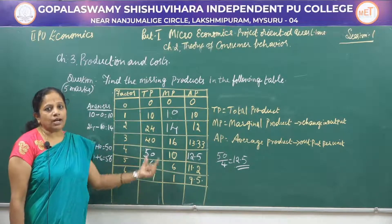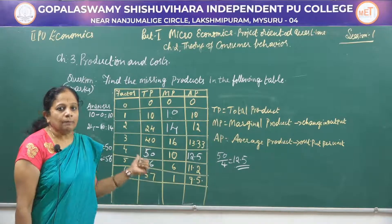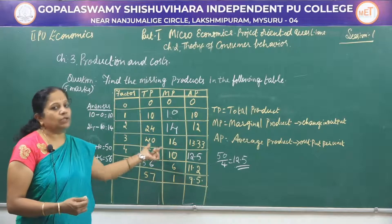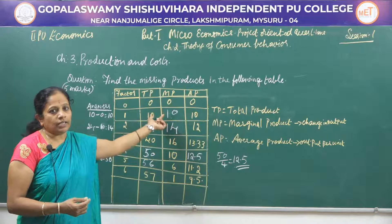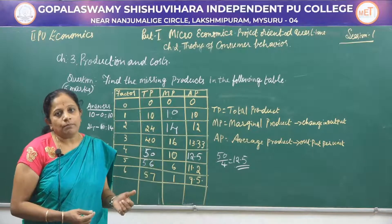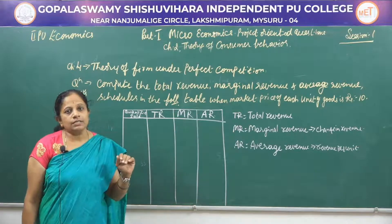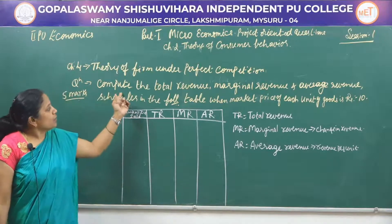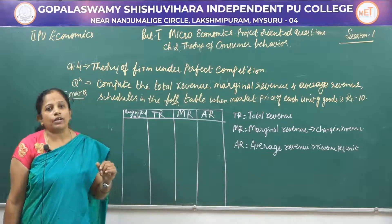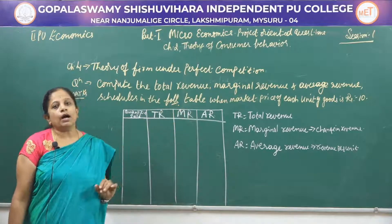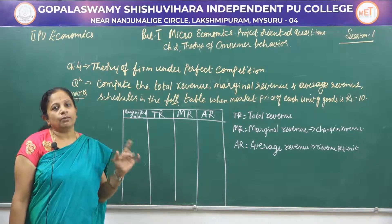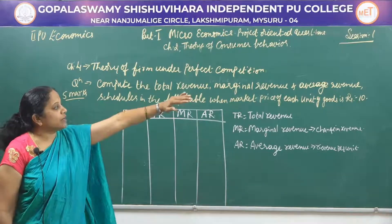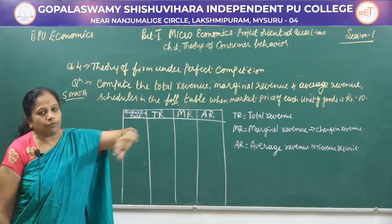In the fourth lesson of microeconomics — theory of firm under perfect competition — there is one more project-oriented question. The question is: compute the total revenue, marginal revenue, and average revenue schedules in the following table when the market price of each unit of goods is ₹10. You have to prepare your own table and calculate total revenue, marginal revenue, and average revenue with the market price of ₹10 per unit.